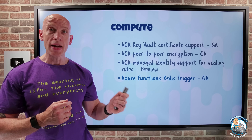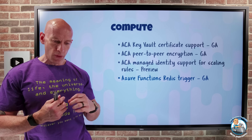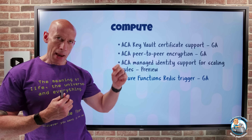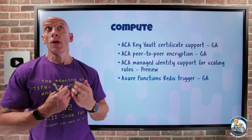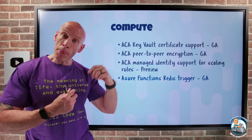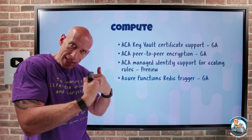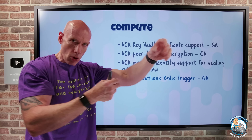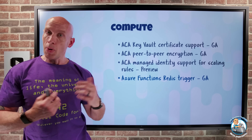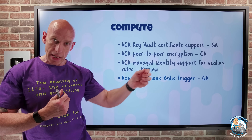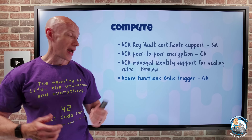Azure Functions now has a Redis extension. I can use it for triggering — useful for write-behind cache scenarios or event-based architectures where something happens in my Redis cache and I need to perform some action on a backend data store. I can also use it for input bindings to retrieve data from the Redis cache, and output bindings to change a key in the cache. All of these are now available with Azure Functions.